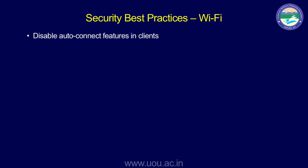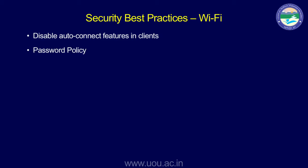Disable auto-connect features in your devices. Because of the evil twin honeypot attack we discussed, if auto-connect is enabled your device will automatically connect to the honeypot. You should disable it and only connect manually when you want to. There should be a password policy — for example, a minimum of 8 characters with a combination of alphabets, numbers, and special characters. Regular audits of the wireless environment are required to identify any vulnerabilities or rogue access points.